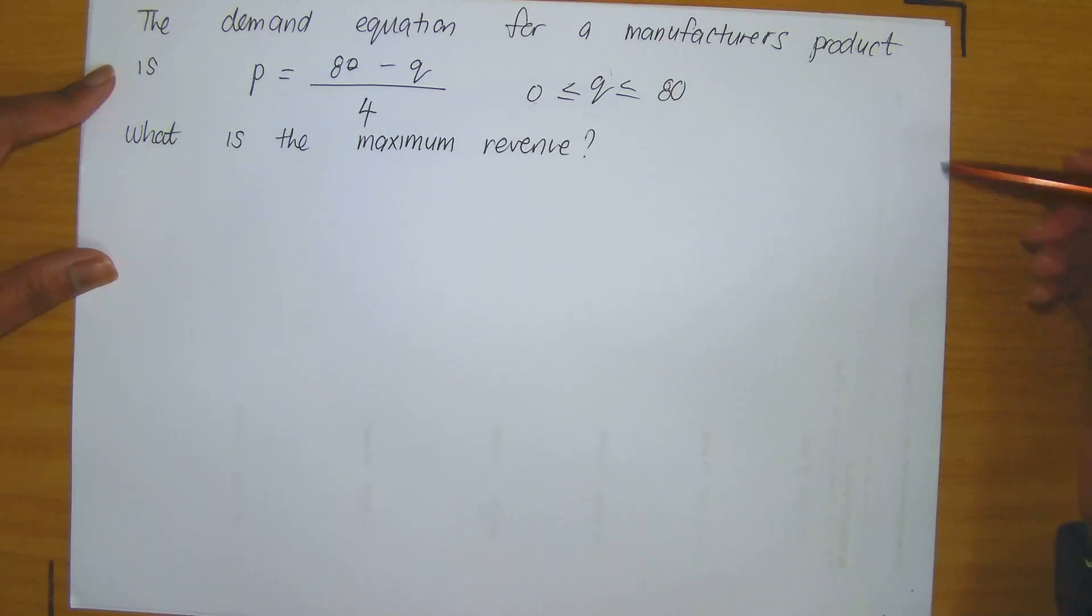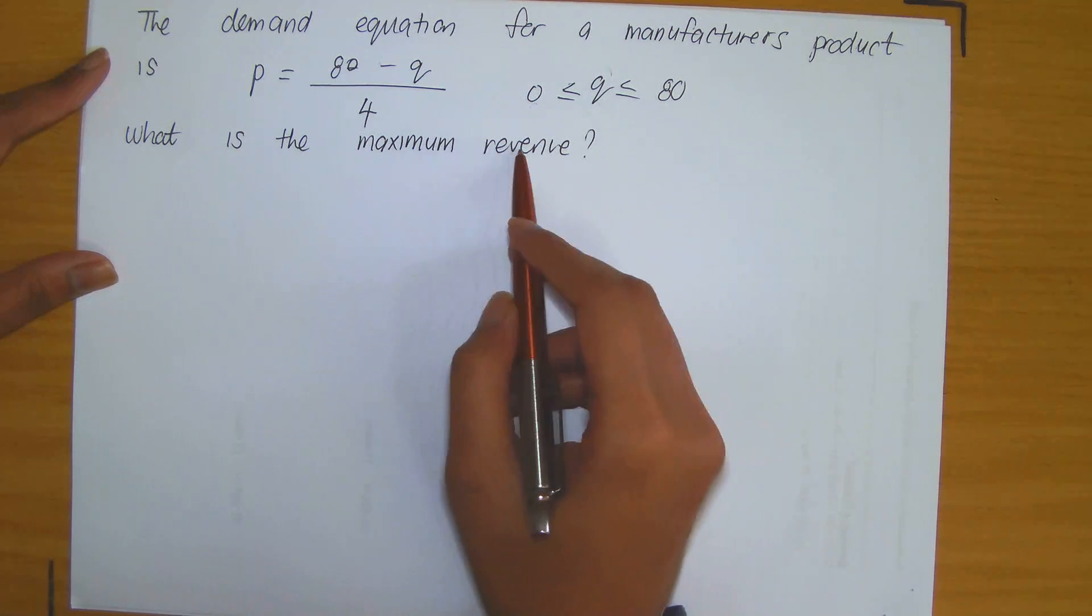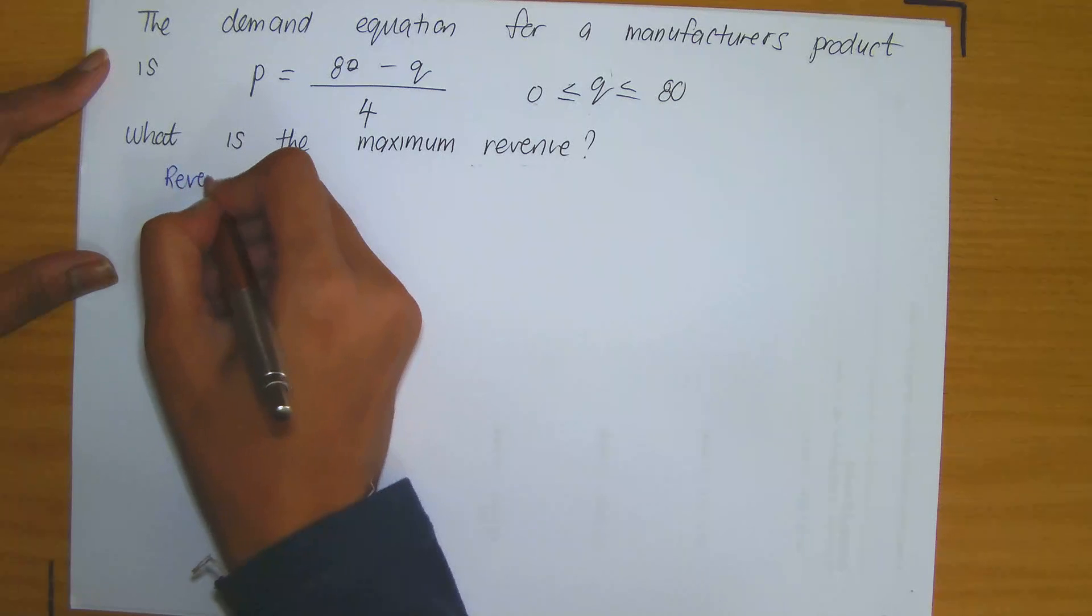So we know we're maximizing revenue. In this case, it's not necessary to draw a diagram. So step one is out. What does step two say? It says set up an expression for the quantity that you're going to maximize or minimize. So that means we want an expression for revenue.